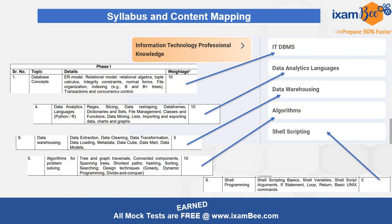Now let's look at the remaining five items — total there are nine items. The first is DBMS: database concepts are covered under IT DBMS. Then data analytics languages like Python or R and related concepts are covered in data analytics languages. Data warehousing is mapped to data warehousing, algorithms under algorithms, and shell scripting under shell scripting. So now you can see all the Phase 1 syllabus is covered under the Phase 1 or Phase 2 common IT section in the iXambi course.